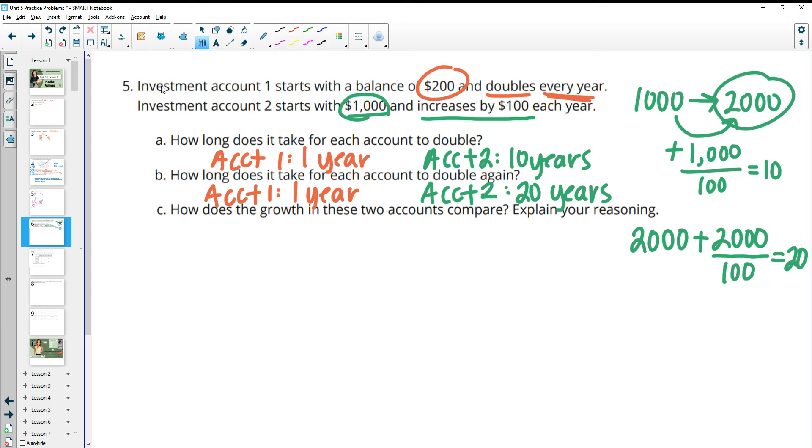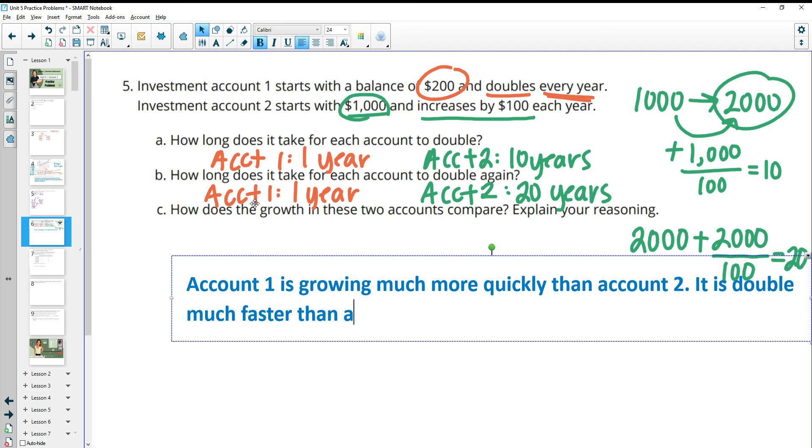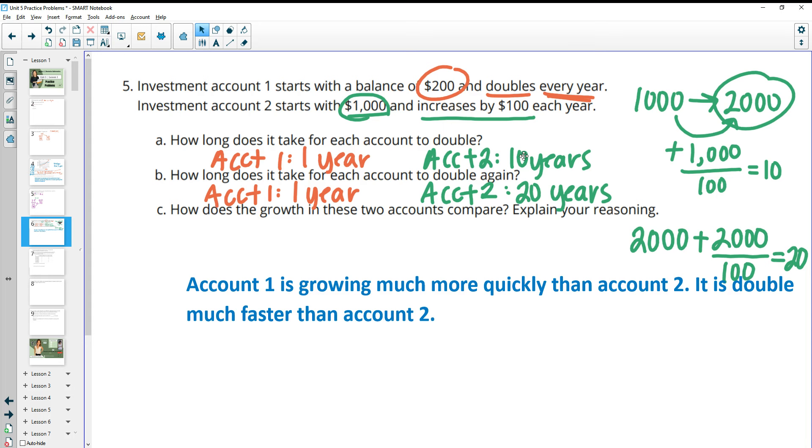So how does the growth in these two accounts compare? Account 1 is growing much more quickly than account 2. And you can see that because it only took it one year to double and then another year to double again. And so this one, the growth is much quicker. It is doubling much faster than account 2. And then account 2, it's taking 10 years to double the first time, 20 years to double the second time.